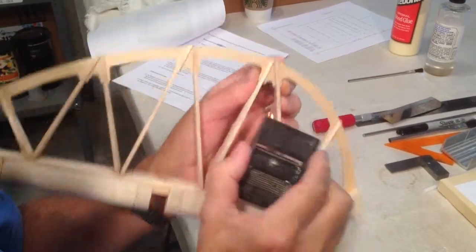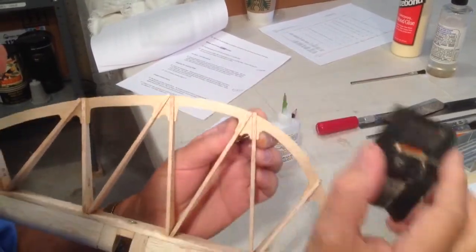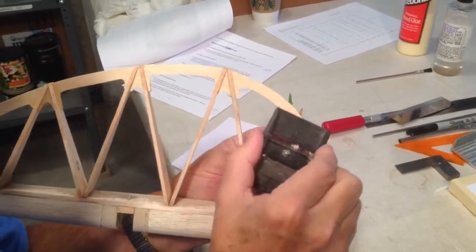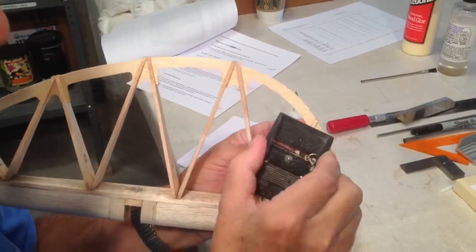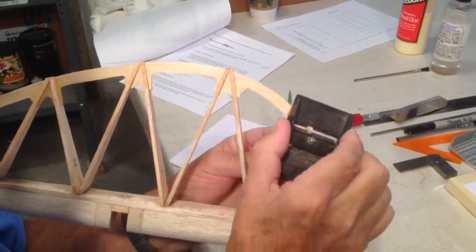This is really a pretty tough balsa on these ribs, which is actually a good thing. Ribs should be of a tougher balsa.